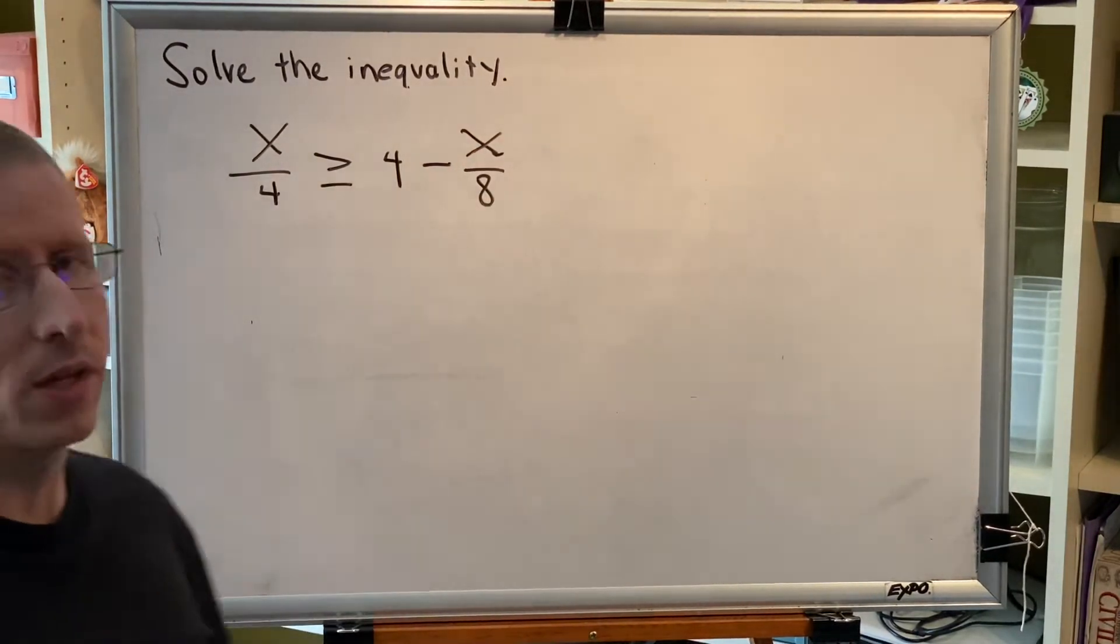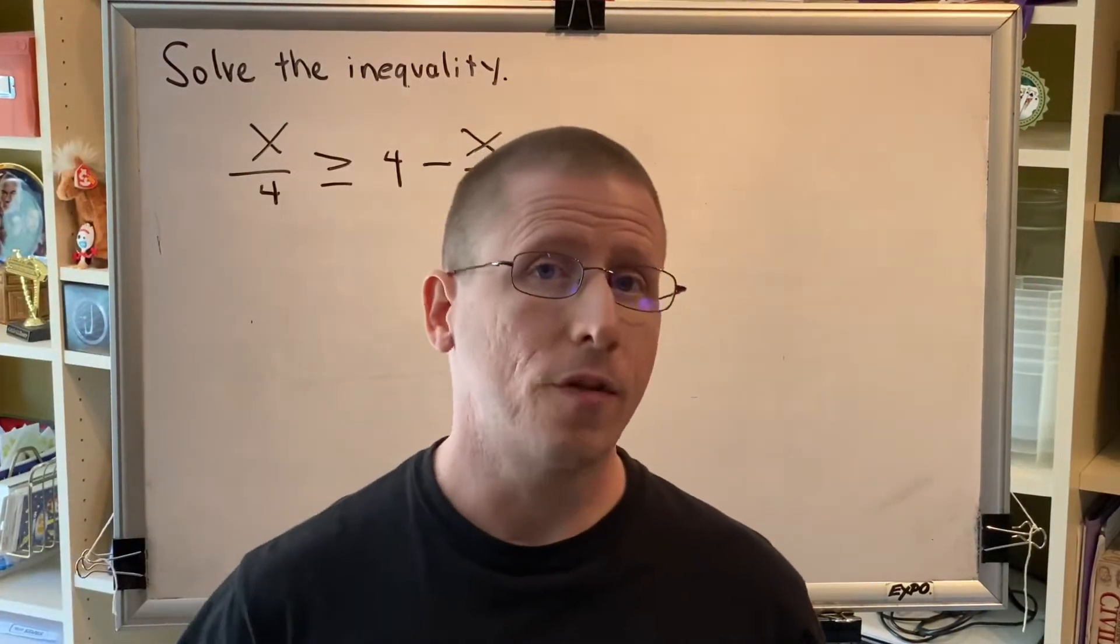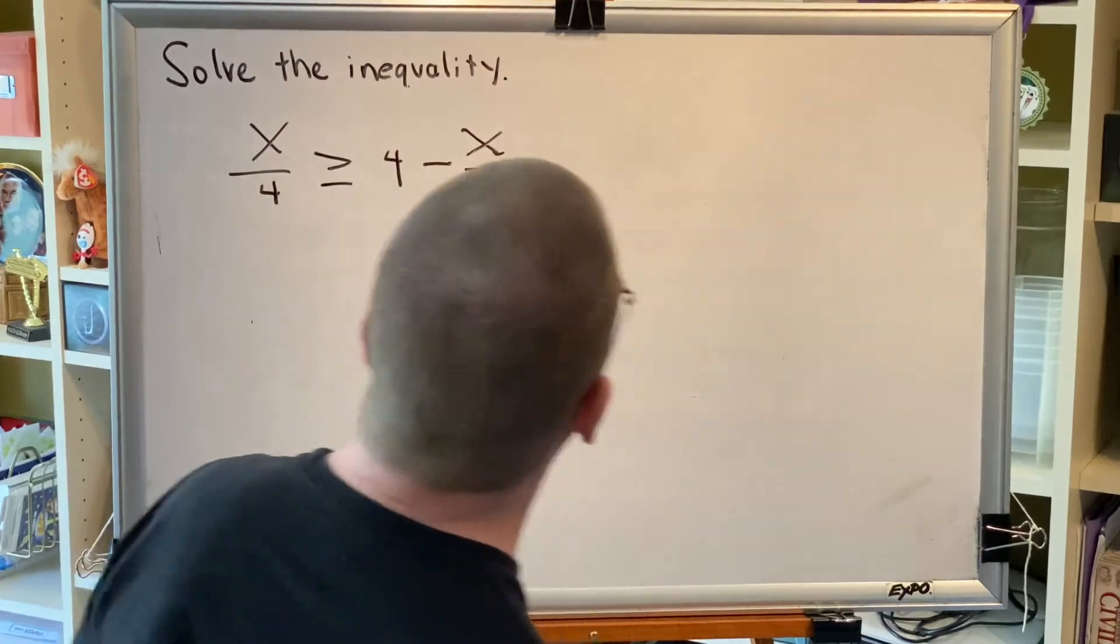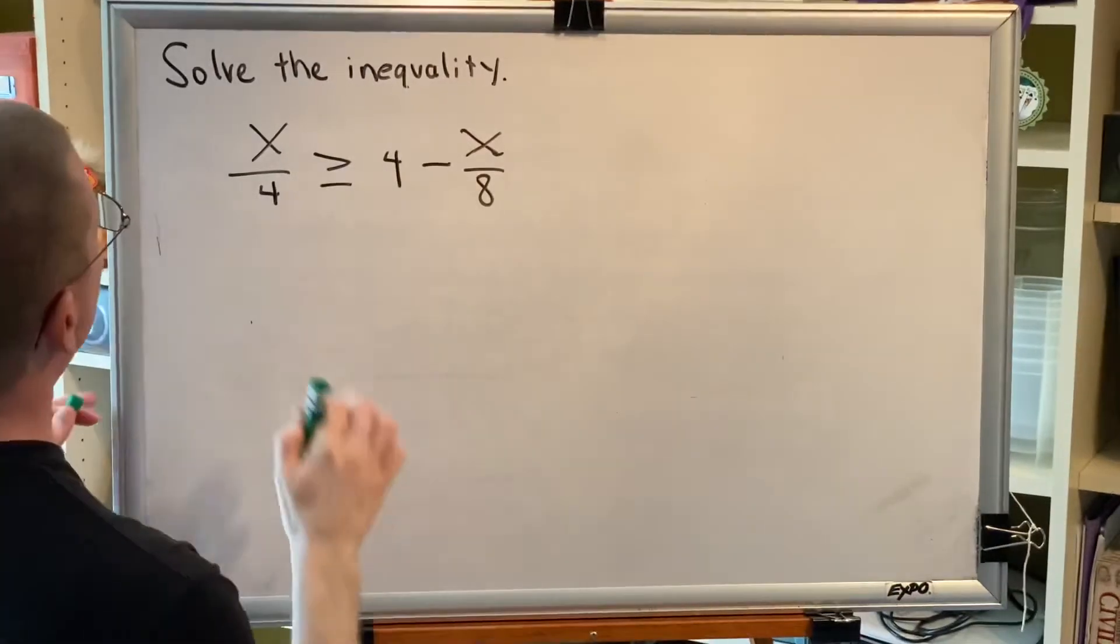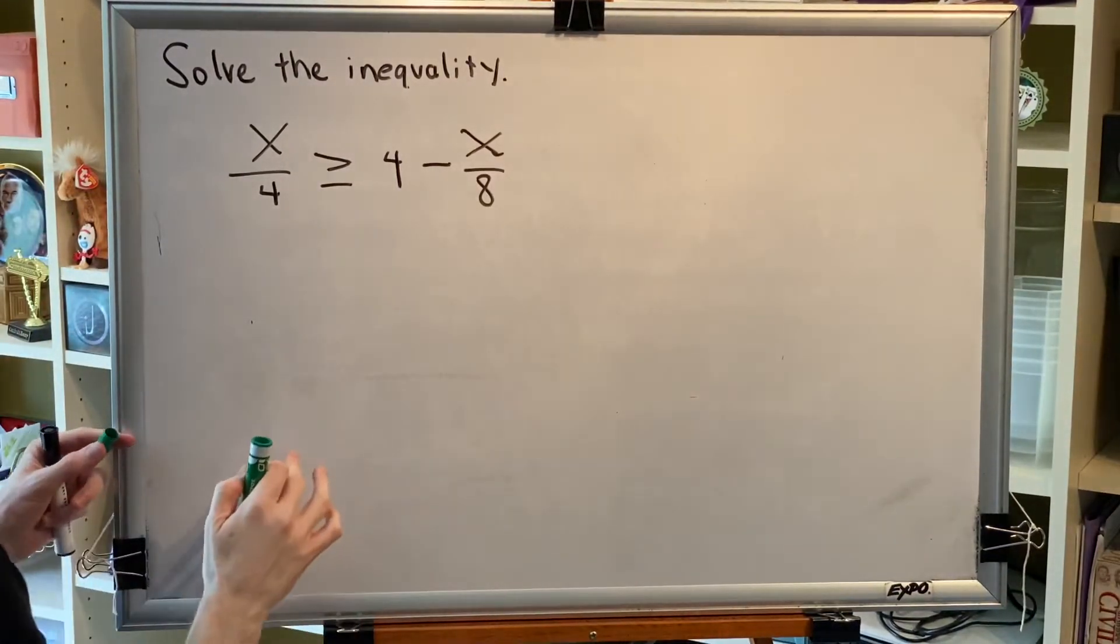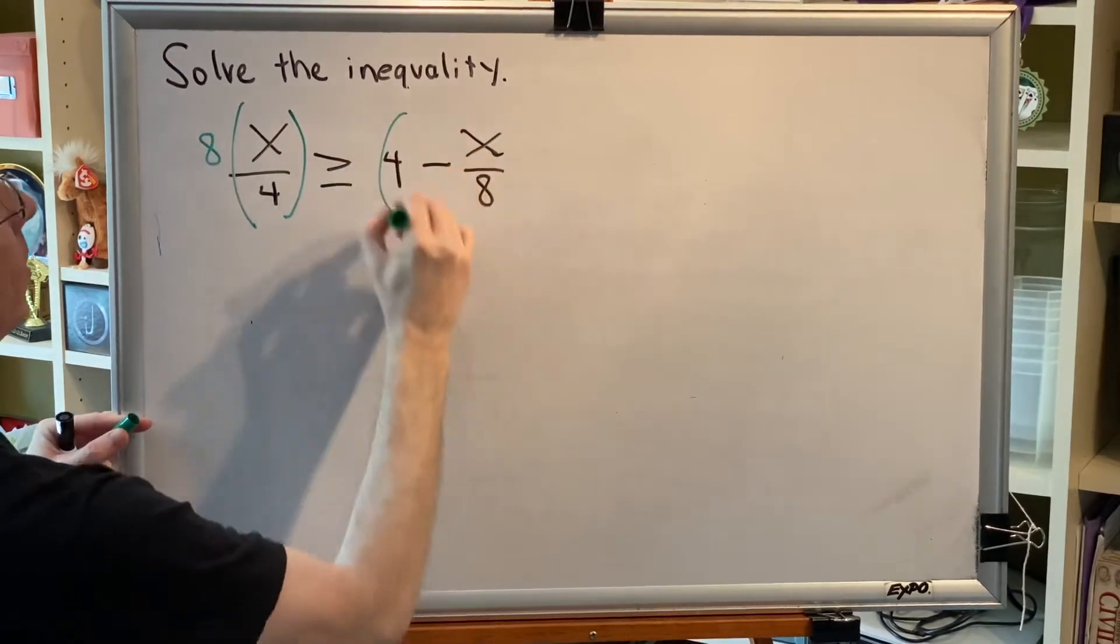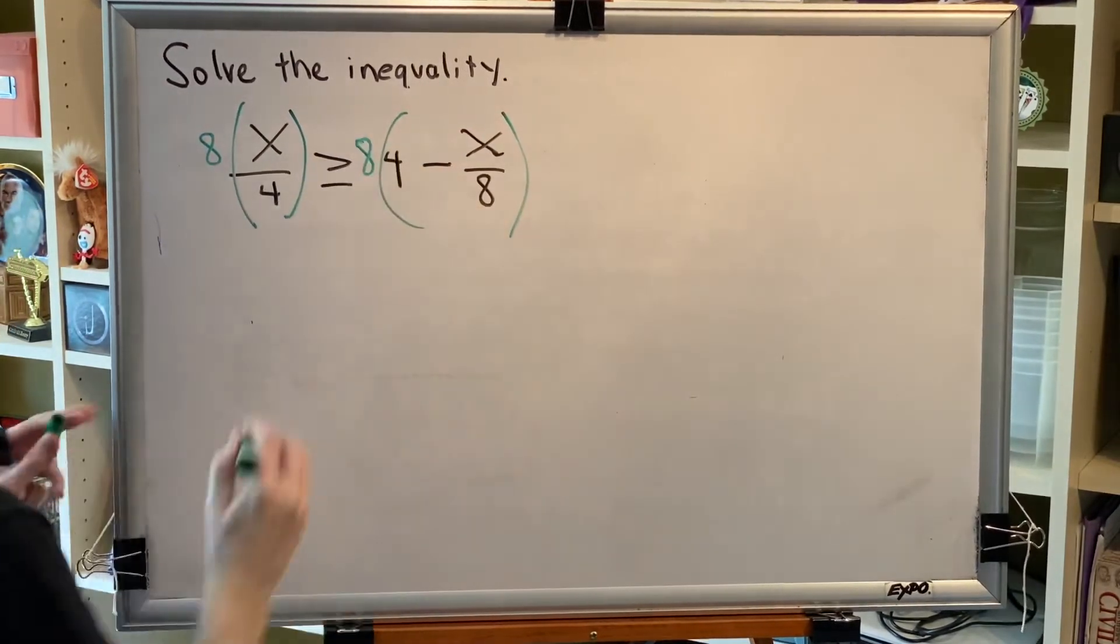This problem doesn't have any grouping symbols, but it does have fractions. So let's clear the fractions by multiplying both sides by the least common denominator. The least common denominator of 4 and 8 is 8. So the entire left side will get multiplied by 8, and the entire right side will get multiplied by 8.